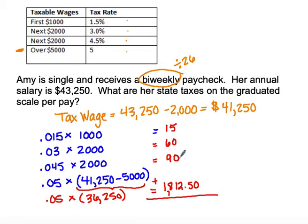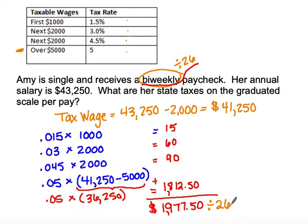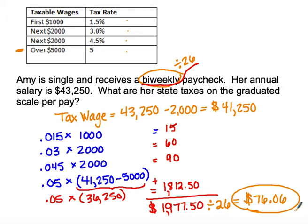She also has to pay the $90, the $60, and the $15, for a total yearly state income tax of $1,977.50. Now we want to know how much is taken out bi-weekly, so we divide by 26 pays. She is going to have $76.06 per pay withheld — her employer takes that out and sends that amount to the state.